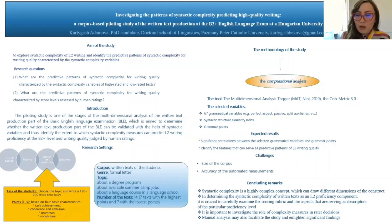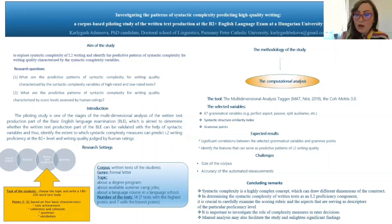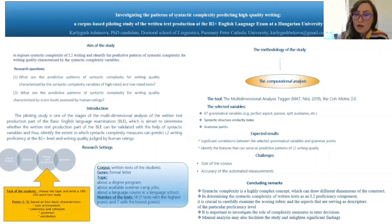Finally, the concluding remarks. Syntactic complexity is a highly complex concept which can draw different dimensions of the construct. In determining the syntactic complexity of written text as a second language proficiency component, it is crucial to carefully examine the scoring rubric and also the descriptors. It is also important to investigate the role of complexity measures in rater decisions — we need to look at what features are significant for the decision-making process. Additionally, manual analysis also facilitates the study and may enlighten significant findings. This is briefly all the issues that were covered in my study, and I hope it was useful and interesting.